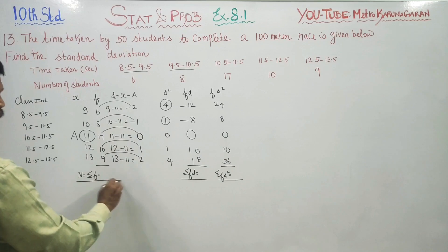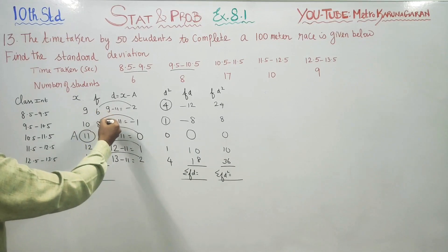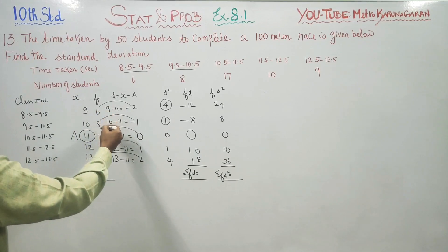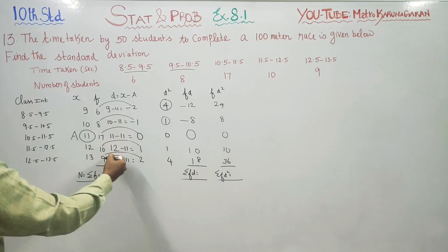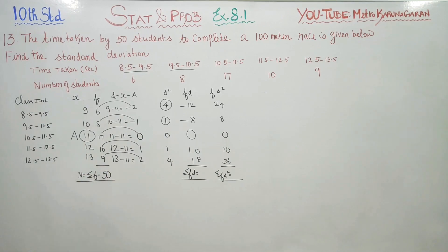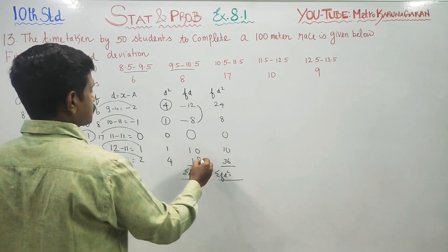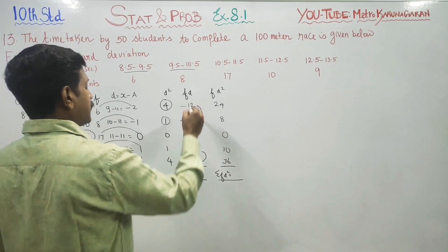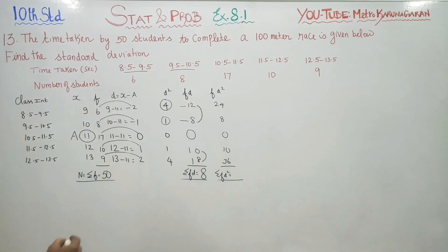Now we count the values. The total is: 6 + 8 = 14, +17 = 31, +10 = 41, +9 = 50. Therefore my n is 50. After finding the value of n, sigma fd equals: minus 12 minus 8 is minus 20, and plus 10 plus 18 is plus 28. So 28 minus 20 is plus 8. Sigma fd equals 8.